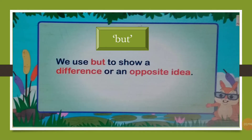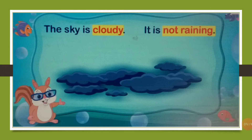So my lovely students, now let's have a look at when we use the conjunction 'but'. We use 'but' to show a difference or an opposite idea. Read these sentences. These sentences are related to each other with opposite ideas. We use 'but' to join words or sentences with opposite ideas, so that these sentences can be joined with the word 'but' in this way.